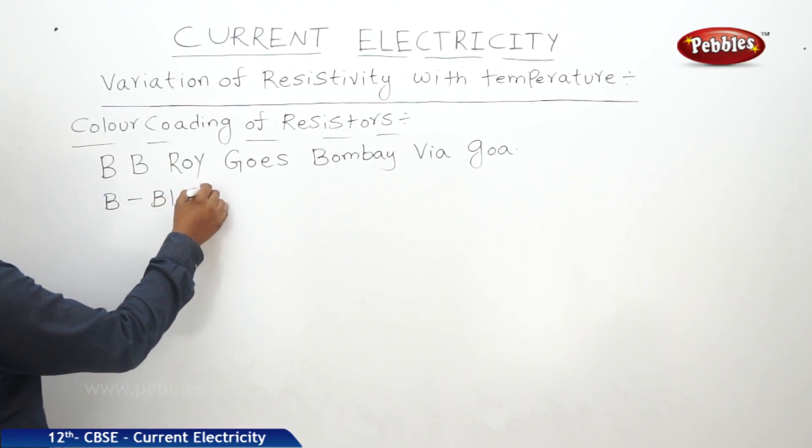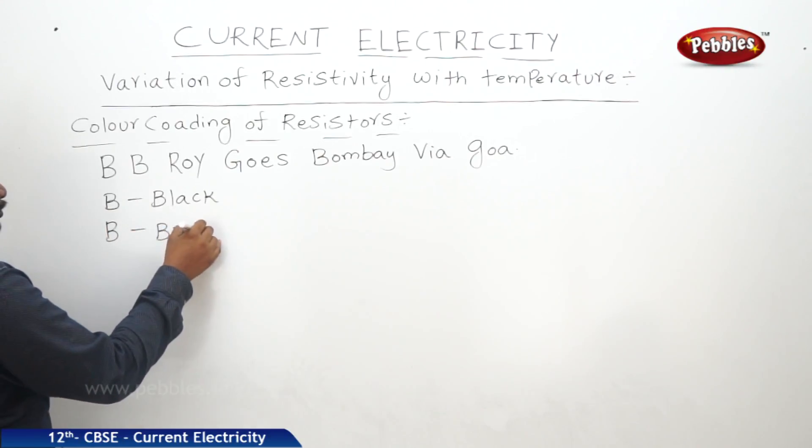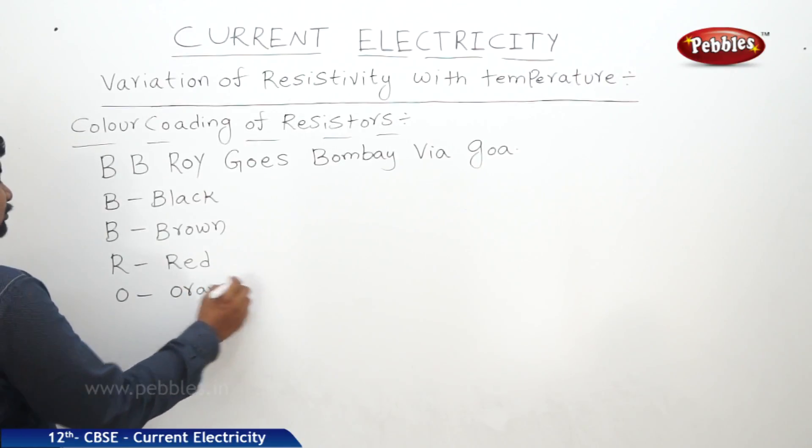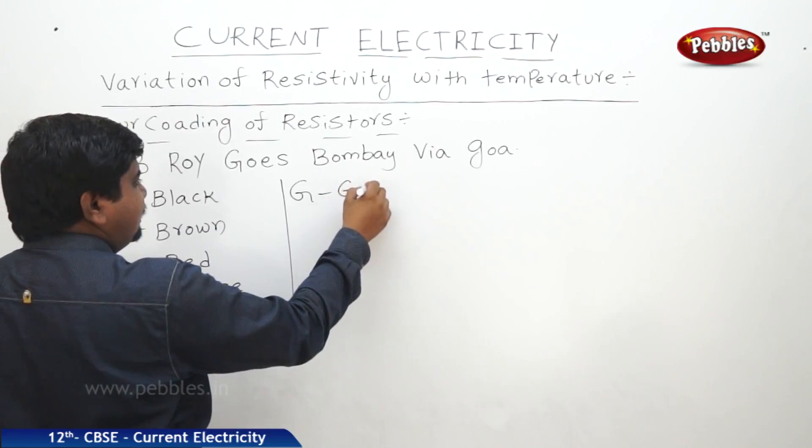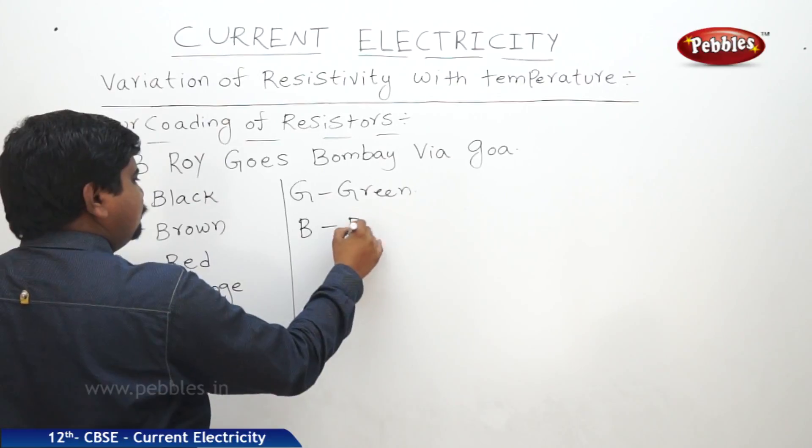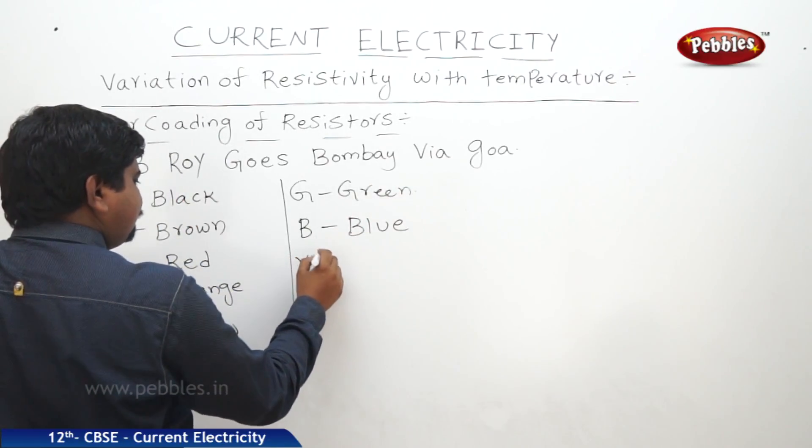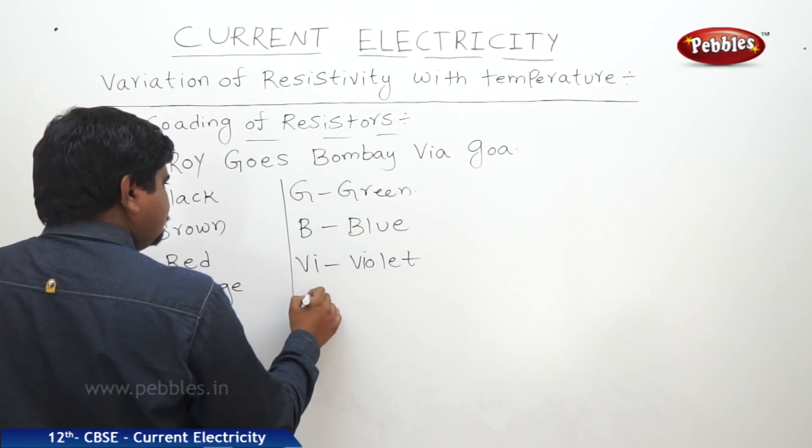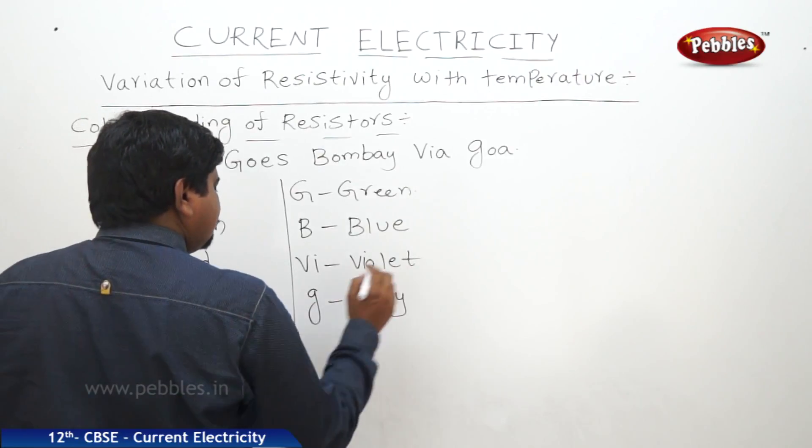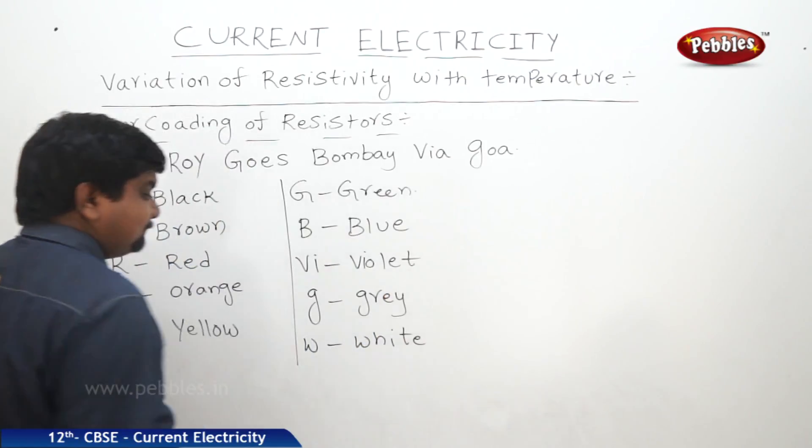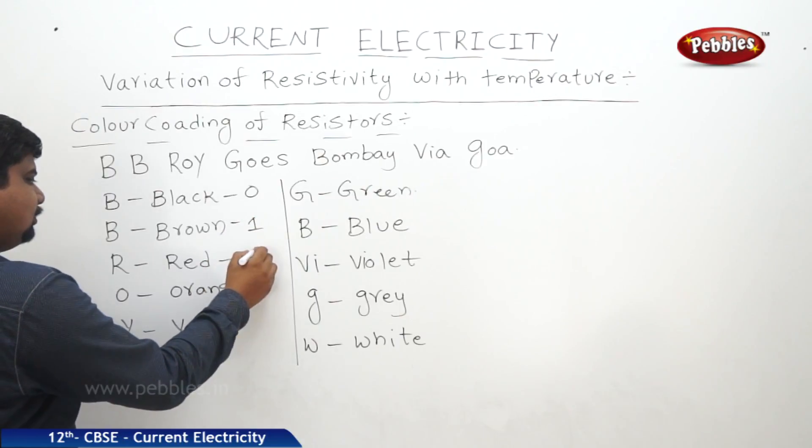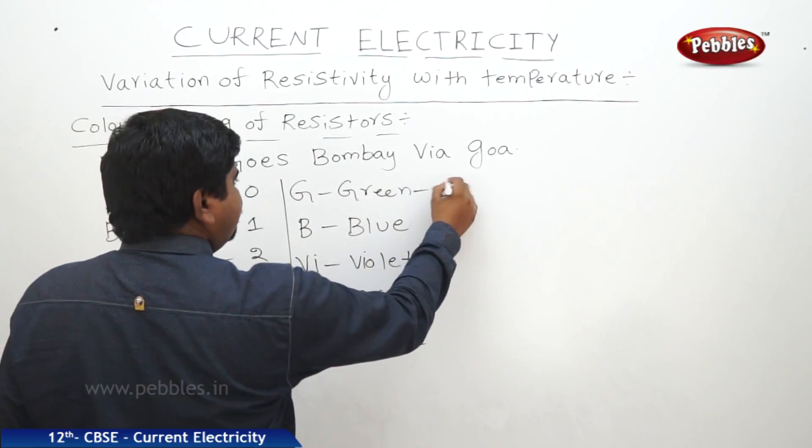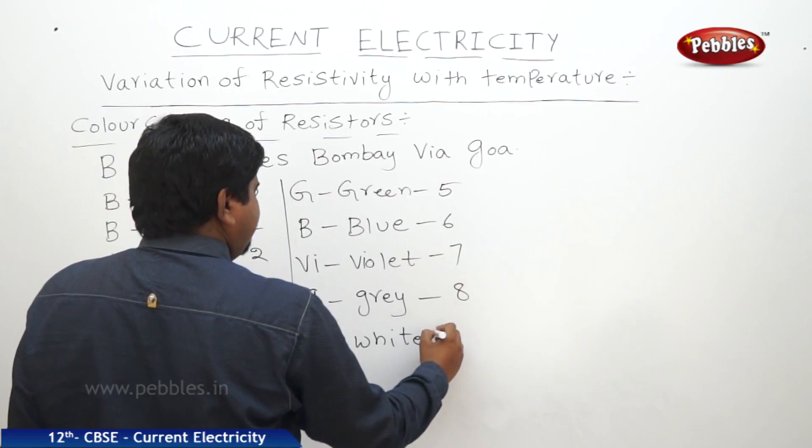Second B is Brown, R for Red, O for Orange, Y for Yellow, G for Green, B for Blue, V for Violet, G for Gray. Last one, W for White. Black is 0, Brown is 1, Red is 2, Orange is 3, Yellow is 4, Green is 5, Blue is 6, Violet is 7, Gray is 8, White is 9.